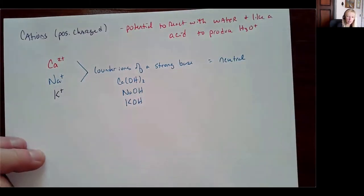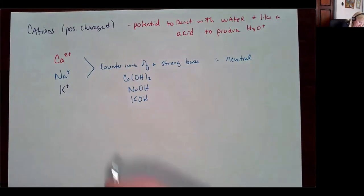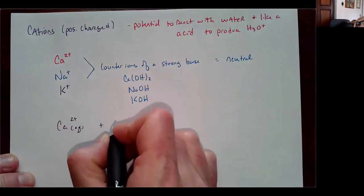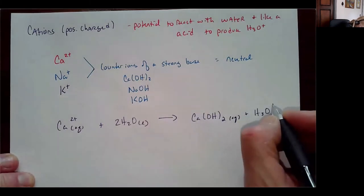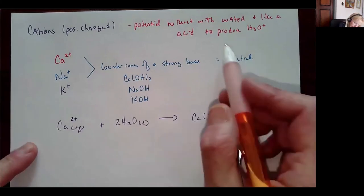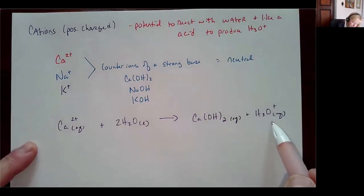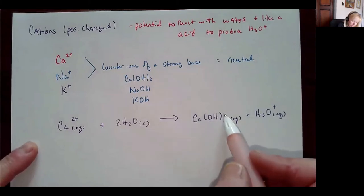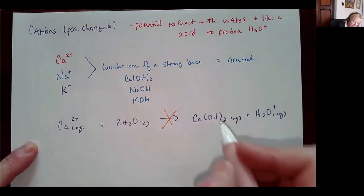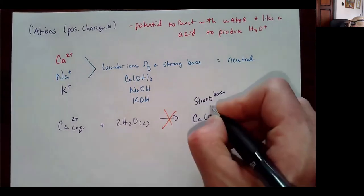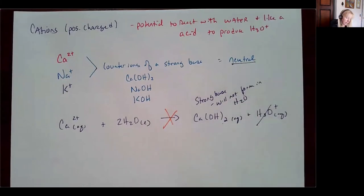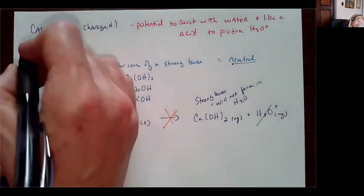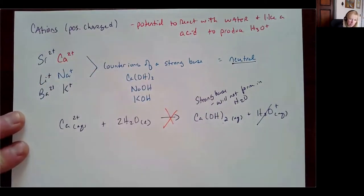Counter ions of a strong base won't react with water to form hydronium ion. For calcium ion to act like an acid, it would have to form Ca(OH)₂ — but since Ca(OH)₂ is a strong base, it will not exist in solution; it won't form in water. So your solution remains neutral. Counter ions of strong bases — calcium, sodium, potassium, lithium, strontium, and barium — are all going to remain neutral.